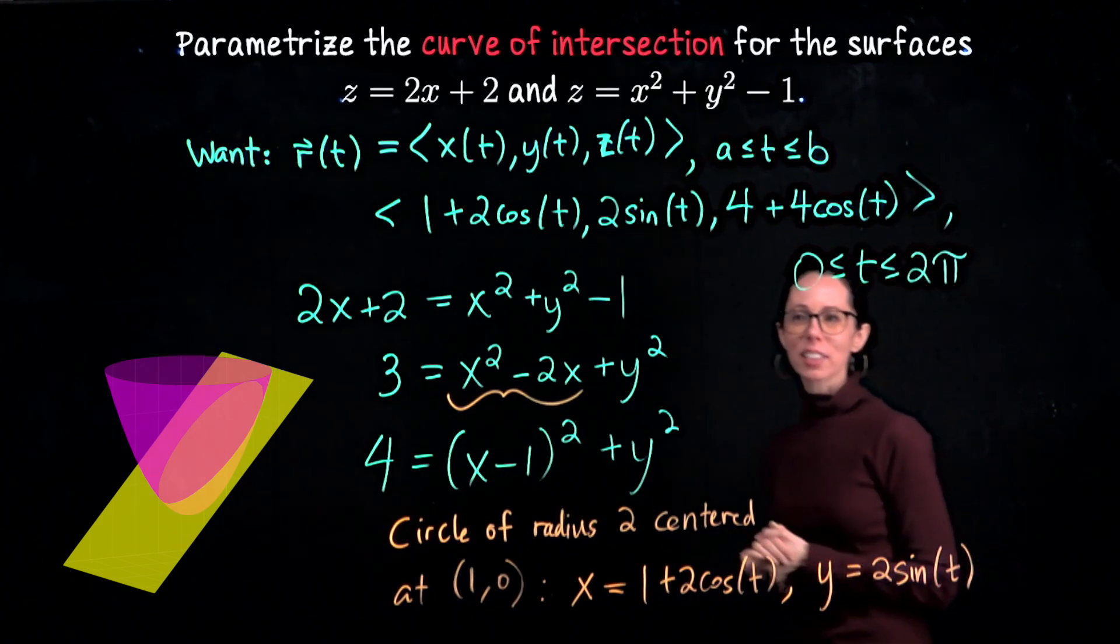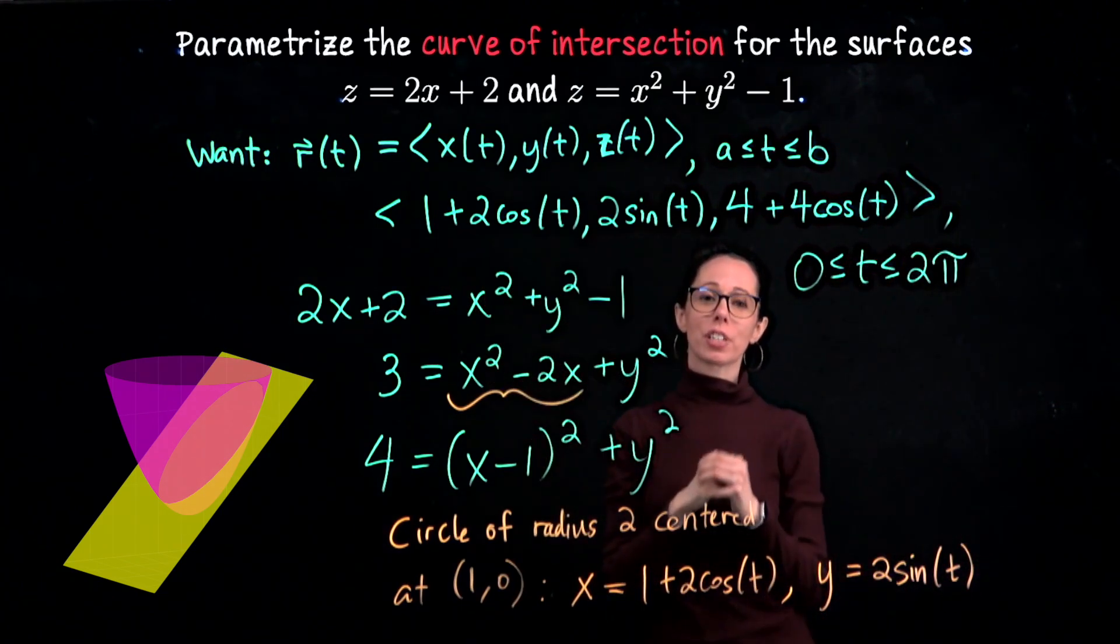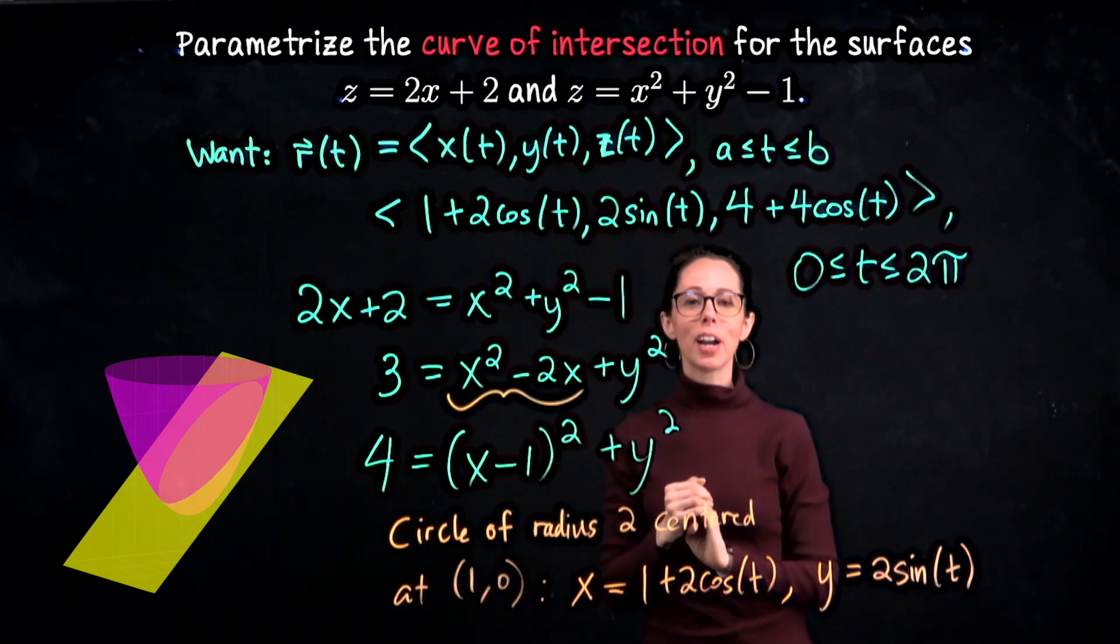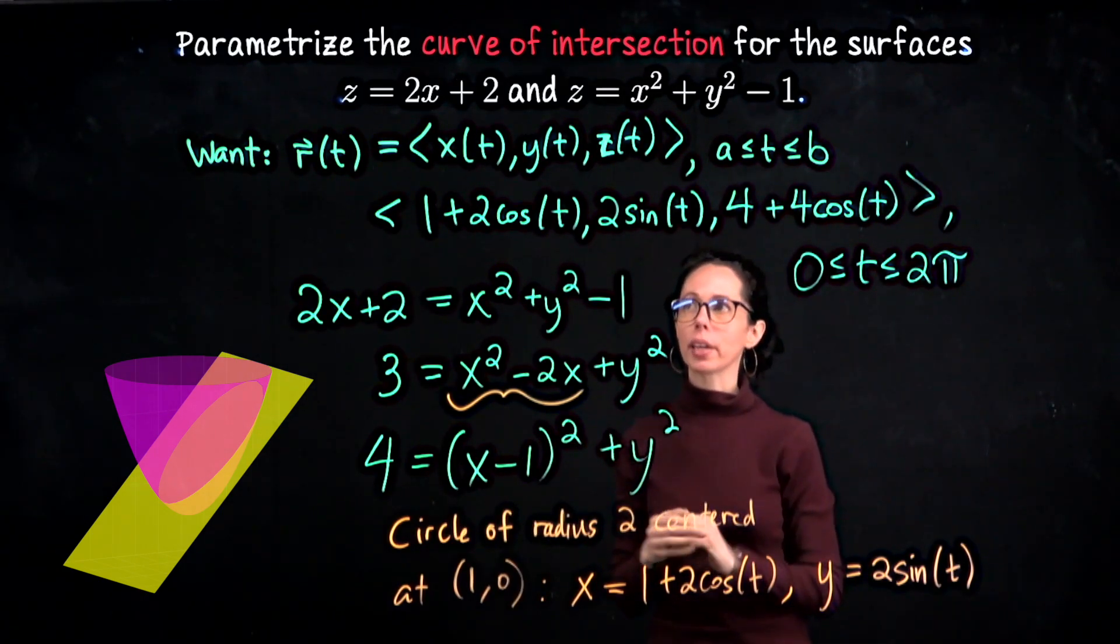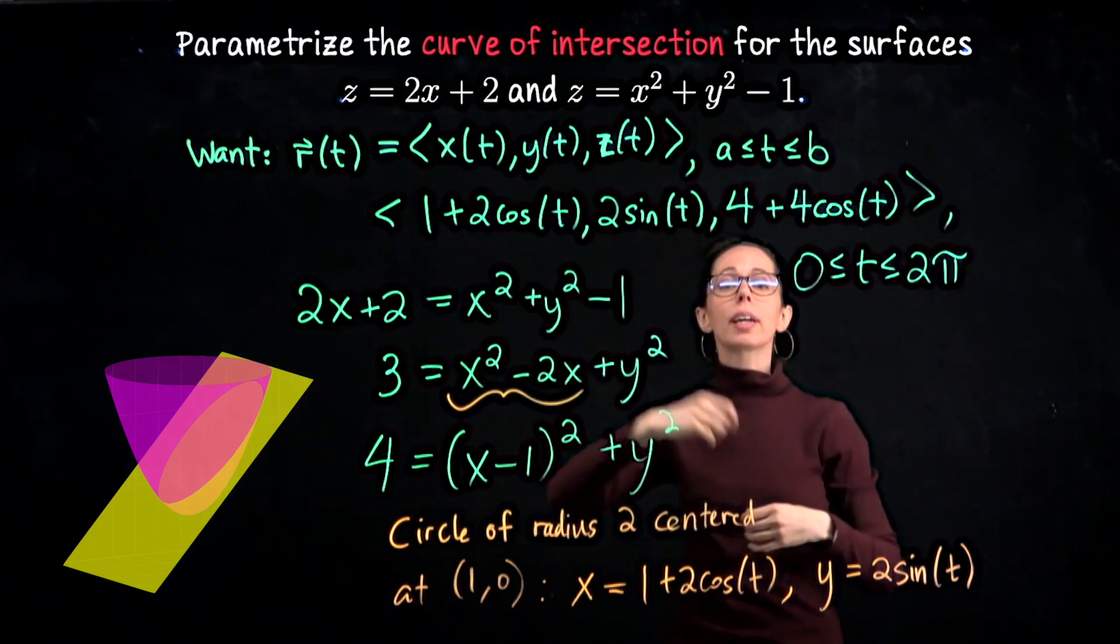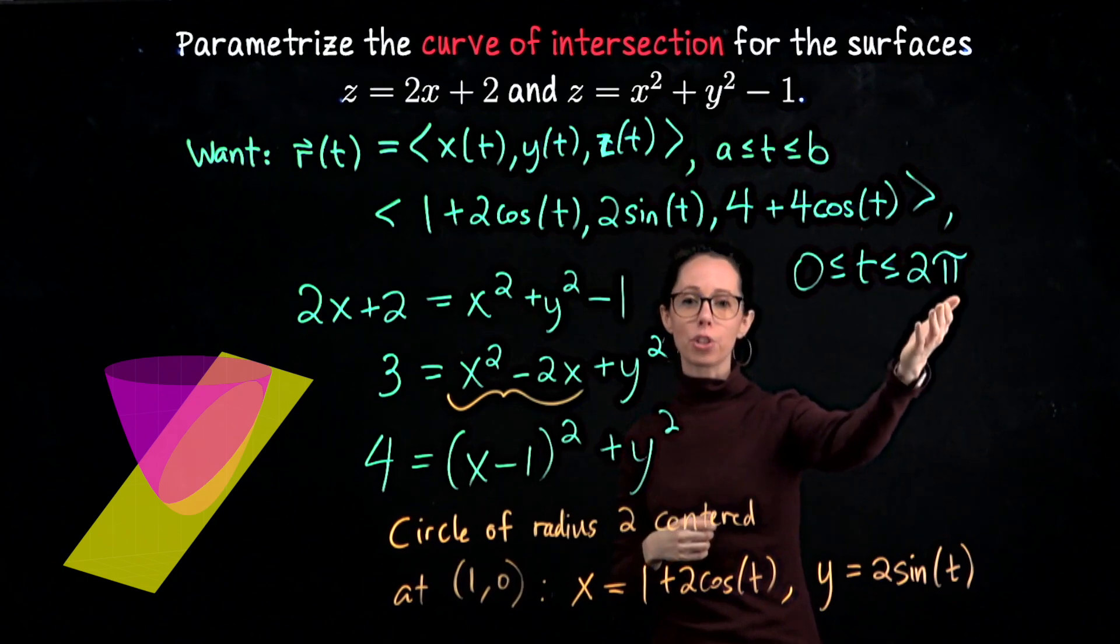We finished the exercise. This is the parametric description for the curve of intersection. What I'm going to do is step away now so you can copy down anything left over, and then I will put up a demonstration showing these two surfaces intersecting and this parametric description tracing out the curve as t goes from 0 to 2 pi.